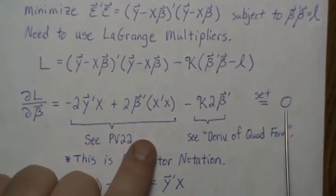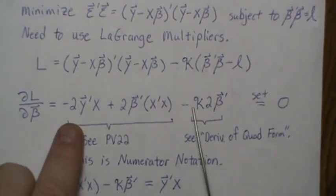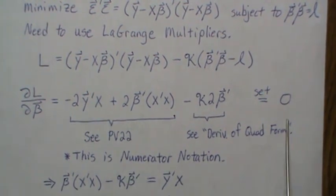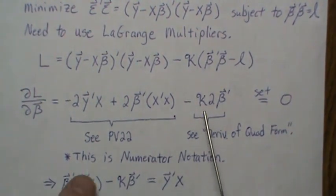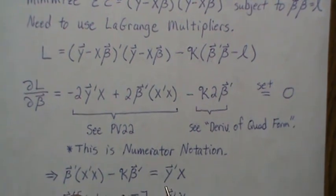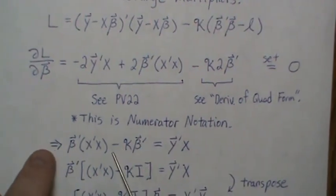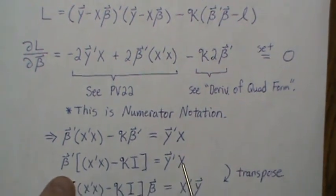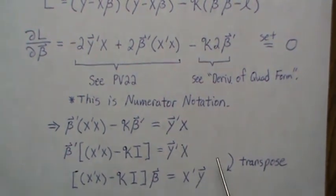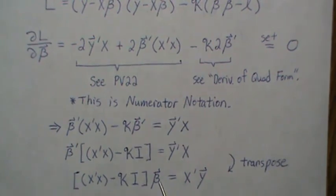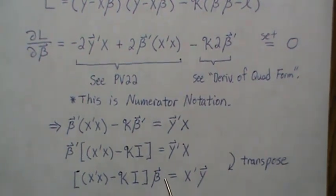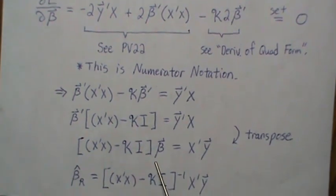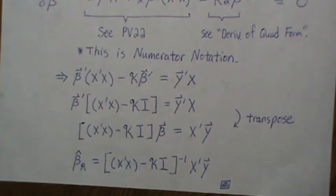Now we set it equal to zero. First thing we do is divide everything by two, then we subtract that to the other side. We left factor out of beta prime. We transpose it because the way my brain works is I like the unknown that we're solving for here. Now we take the inverse matrix of this, and that's it—that's our ridge estimator.